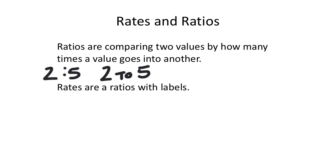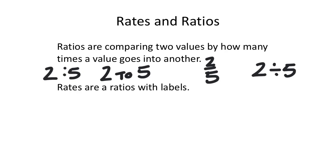You may also have seen a ratio written as a fraction — two over five — and you could also show it with the actual operation: two divided by five. All of these represent the same ratio, two to five, just written differently.